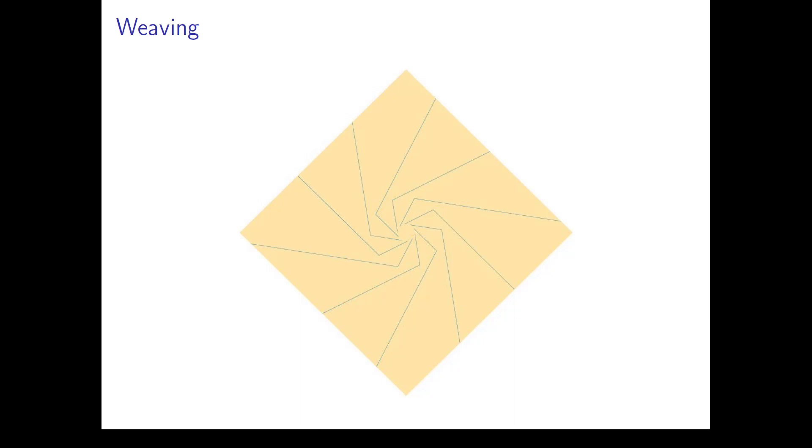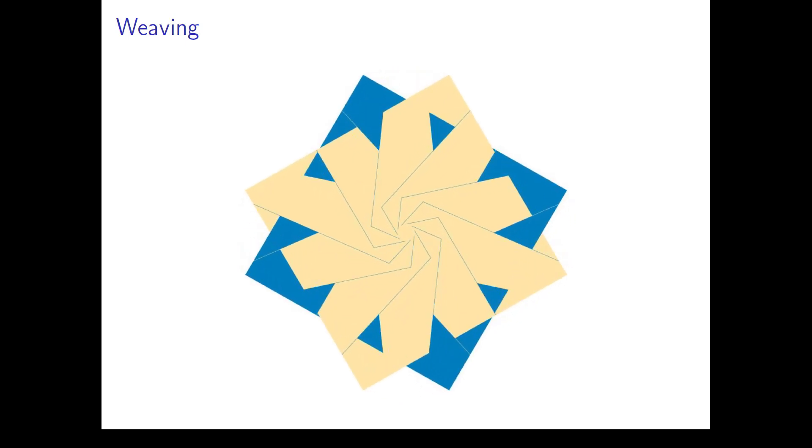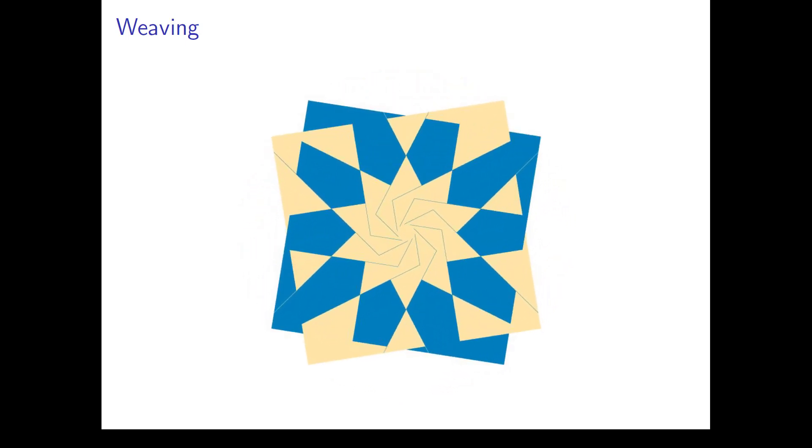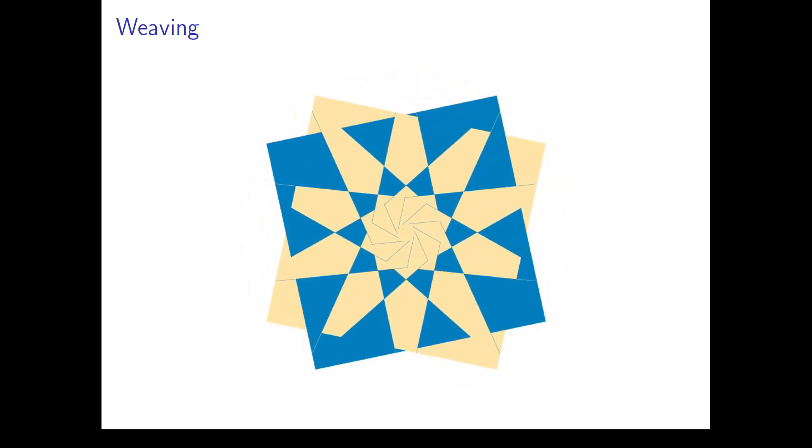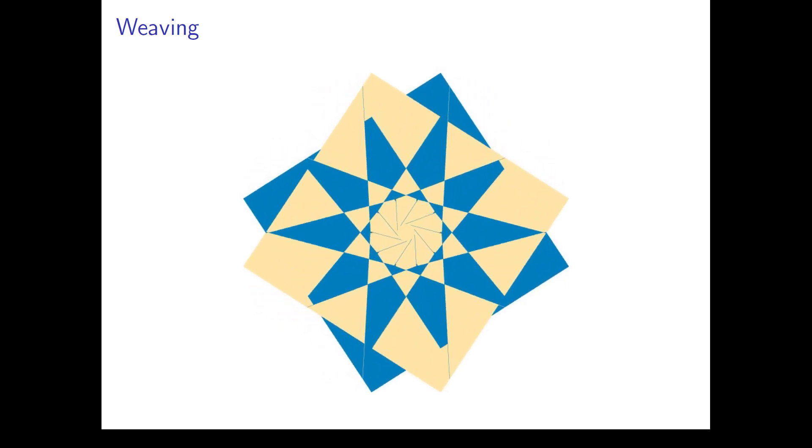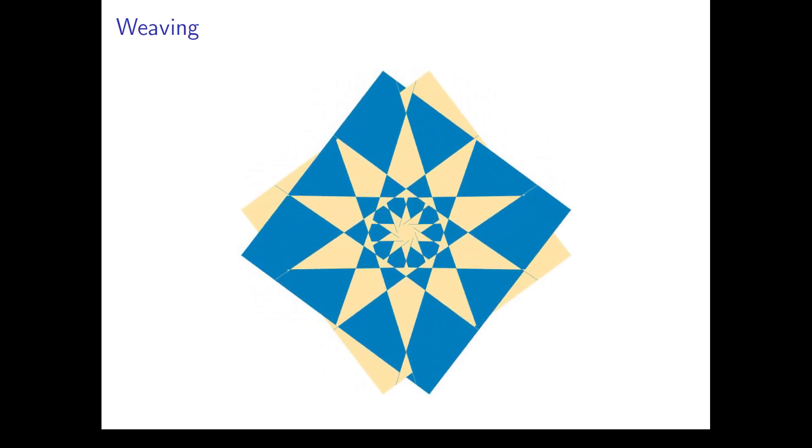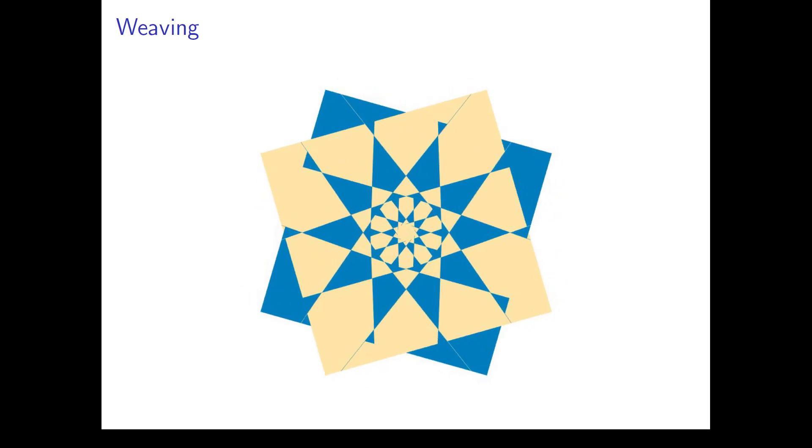Here we can see how the weaving for the star is done. One sheet is put on top of the other, and then the two sheets are rotated into opposite directions. As the sheets are rotated, the strips are woven up and down. The rotation stops when the line endpoints meet.